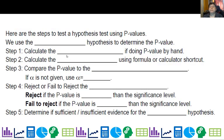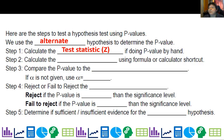Here are the steps to test a hypothesis using p-values. We use the alternate hypothesis to calculate the p-value, which means we're either doing a left-tailed test, a right-tailed test, or a two-tailed test. We calculate the test statistic, then we can use z to calculate the p-value using a formula like normal CDF, or we can do a calculator shortcut — I will show you that shortly.